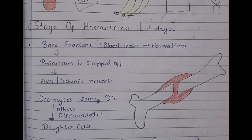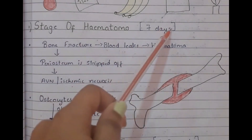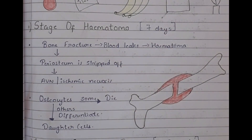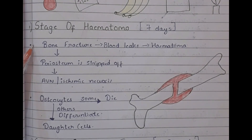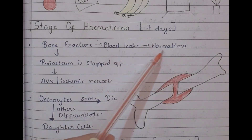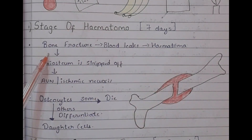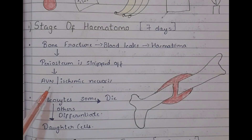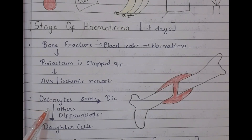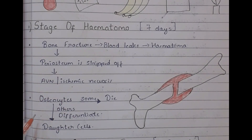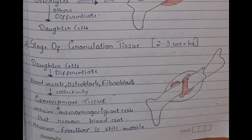The first stage is the stage of hematoma, lasting about seven days. Initially there is a bone fracture, causing blood to leak and form a hematoma. The periosteum is stripped off, resulting in avascular necrosis, also called ischemic necrosis. Some osteocytes die, while others differentiate to form daughter cells.